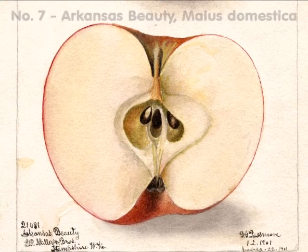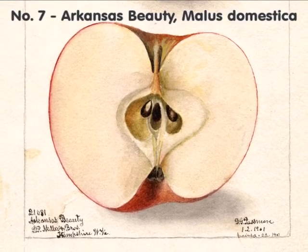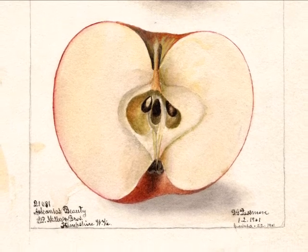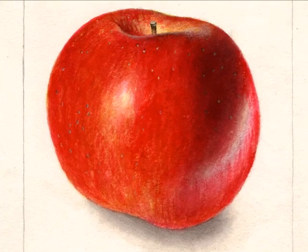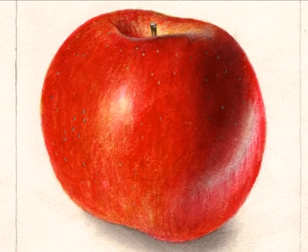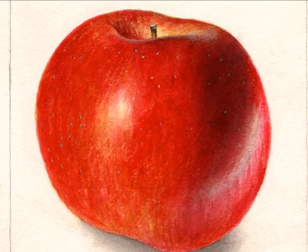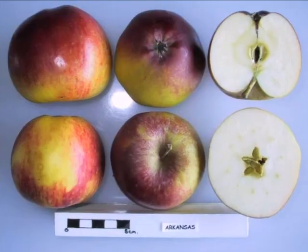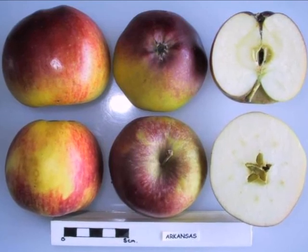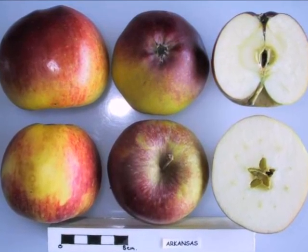And this is the last item on the list. The Arkansas Beauty, Malus domestica, an apple named after the state of Arkansas. Look how pretty this apple appears. And here are examples of this apple from upside down and inside out.